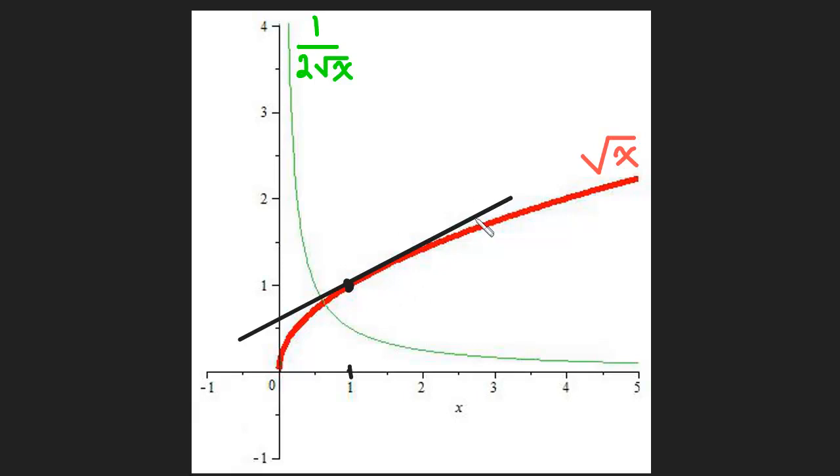If we want to know the slope of this tangent line, all we do is we use the same x value, and we just find the derivative. The derivative, the value of the derivative there is one-half. So that tells us the slope of this tangent line is one-half.